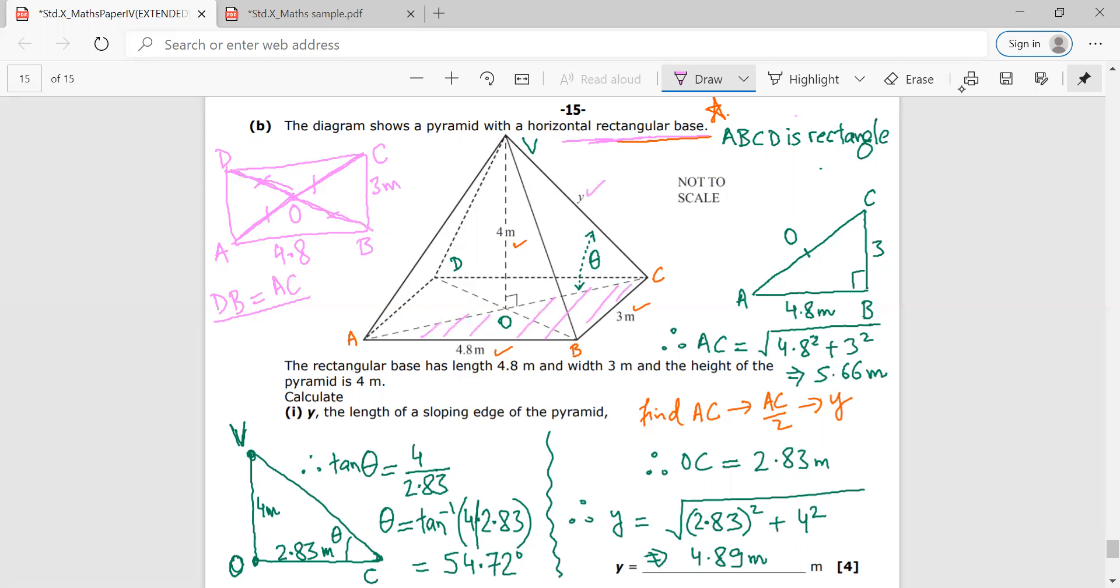So in triangle, in this base triangle ABC, AB is 4.8, BC is 3 meters. This is 3 meters. This is point O, would be this point O, would be this point O. Yes. So AC I can find by using Pythagoras theorem because this angle, this angle, this angle would be 90 degrees.